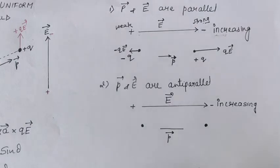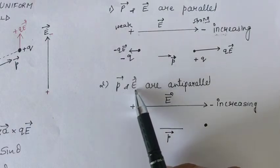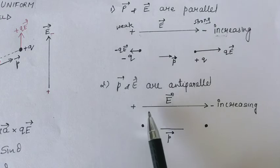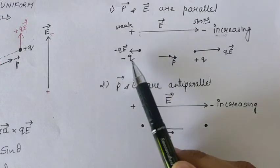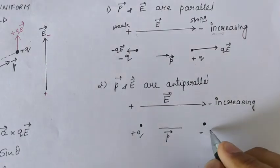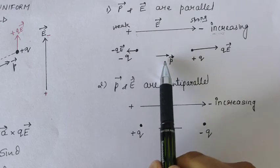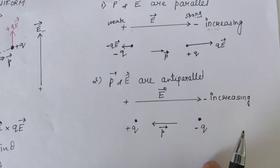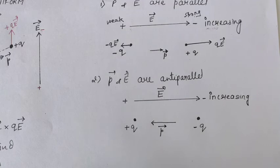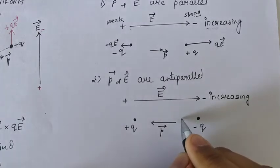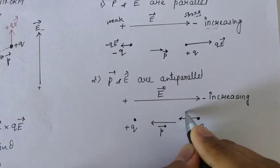Now let's discuss another case: when p and E are anti-parallel. The direction of the electric field remains the same, but we change the direction of the dipole — the negative charge becomes where the positive was, and the positive becomes where the negative was. So the direction of p is reversed, from negative to positive in the opposite sense. The force acts on both charges; where the field is strong, the force is also strong.